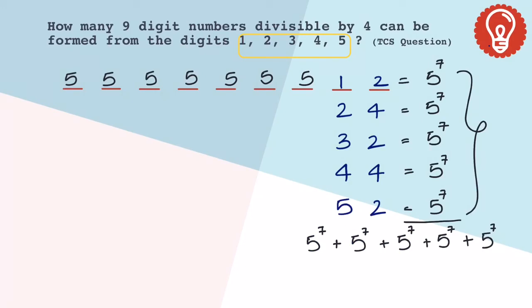And this can be written as 5 power 7 into 5, or this can also be written as 5 power 8, and that's the correct answer.